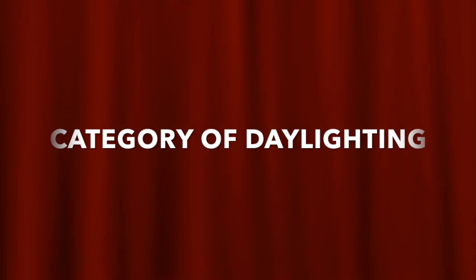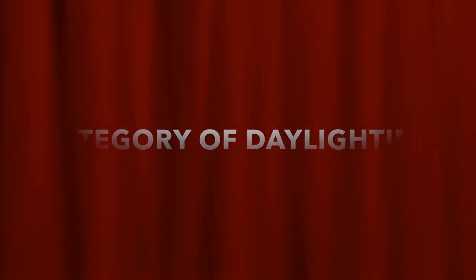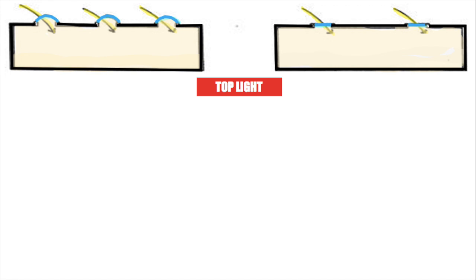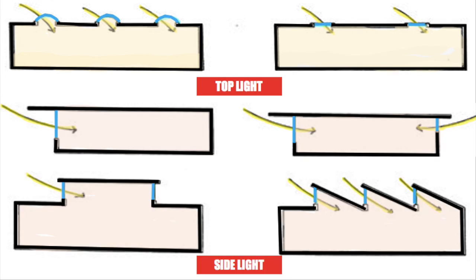Daylighting installation falls in two categories: top light and side light. Top light system uses skylight to bring in light from top of a building. Side light system lets daylight in through windows or other openings on side of the building.